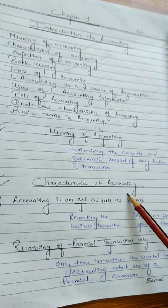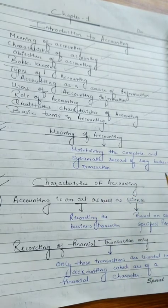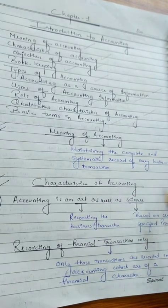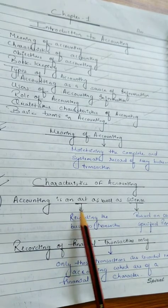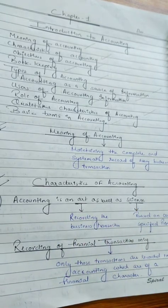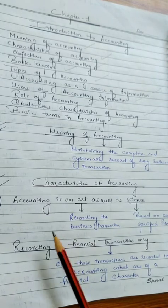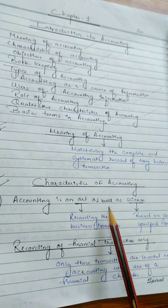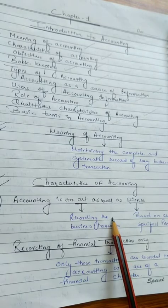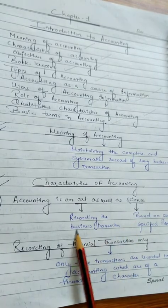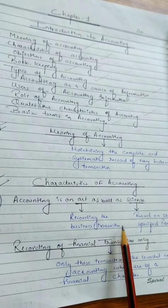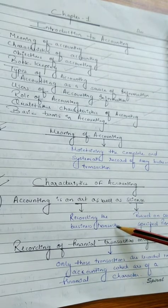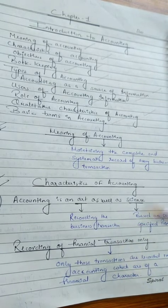The second topic is characteristics of accounting. The first characteristic is that accounting is an art as well as a science. How is accounting an art? Accounting is an art as it records, classifies and summarizes the business transactions to ascertain the profit and loss of the business and the financial position of the business.